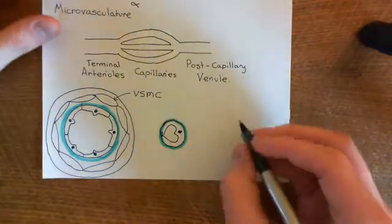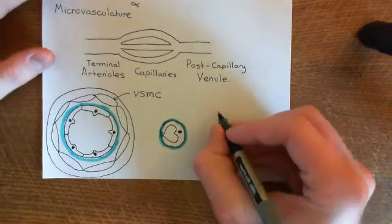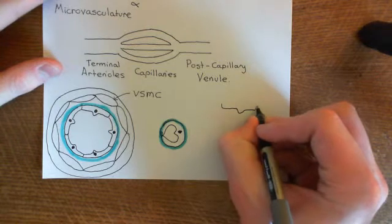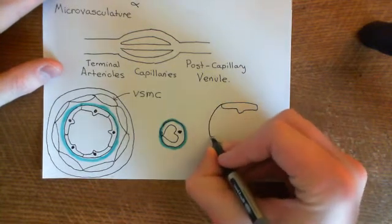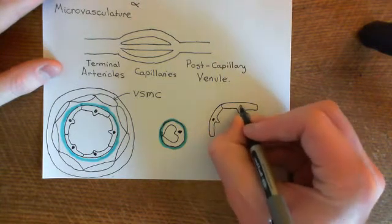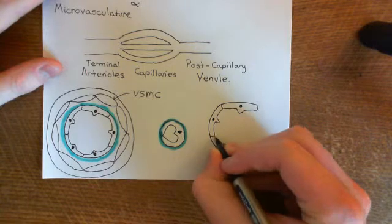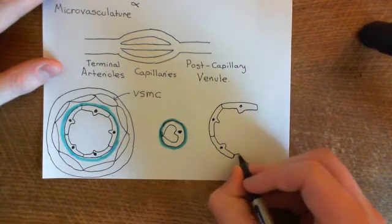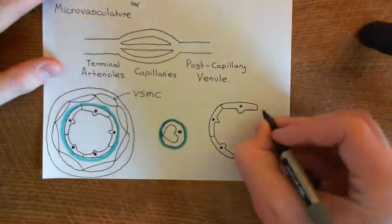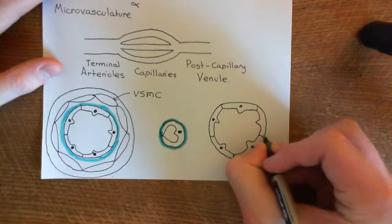Let's have a look at post-capillary venules. These are very like the terminal arterioles, except they don't have the vascular smooth muscle cell layer. They're also like big capillaries, in that the only two layers they have are the endothelial cell layer sitting on a basement membrane. Their wall is very, very simple and very, very thin — it just has these two layers. There are endothelial cells sitting on a basement membrane of collagen. This means that they are perfect targets for the increased vascular permeability within the acute inflammatory response, and also leukocyte extravasation.